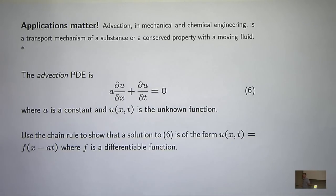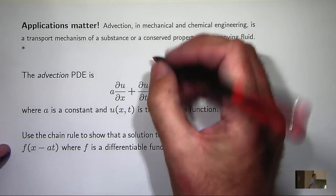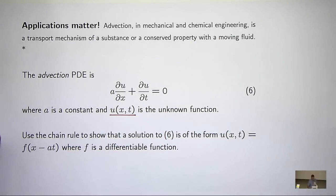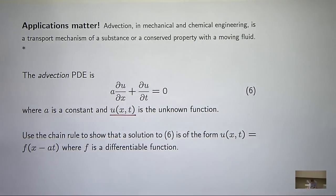Now, here a is just a constant. u is a function of two variables. You can think of x as representing position and t as representing time.